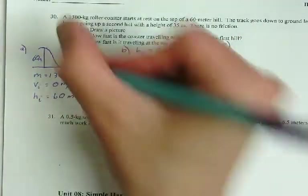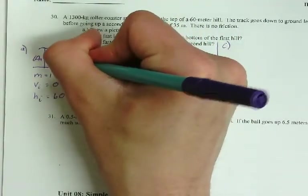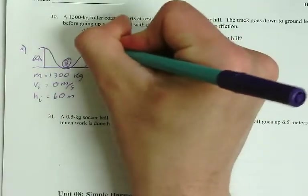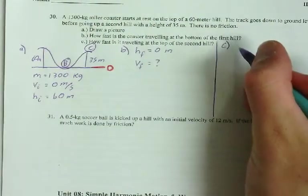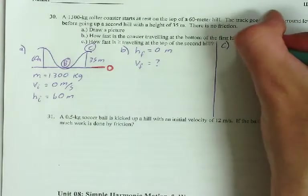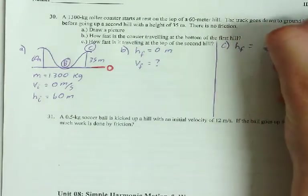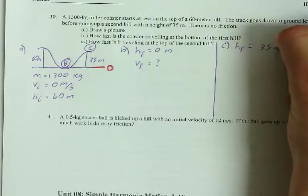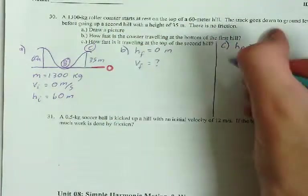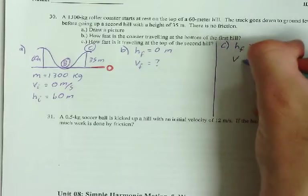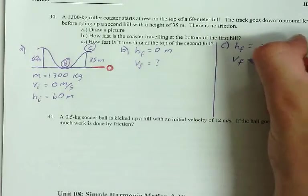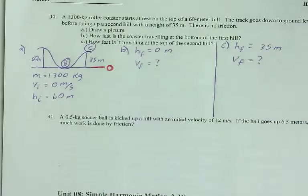C wants to know what's at the top of the second hill. So h_final for C is 35 meters above the ground, 35 meters above zero. And v_final is what I'm solving for. So I'm going to leave you to go and try to solve it. I'll give you two hints.